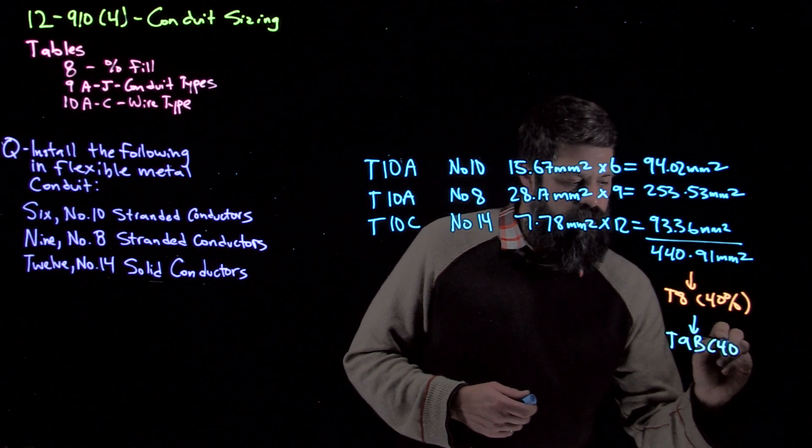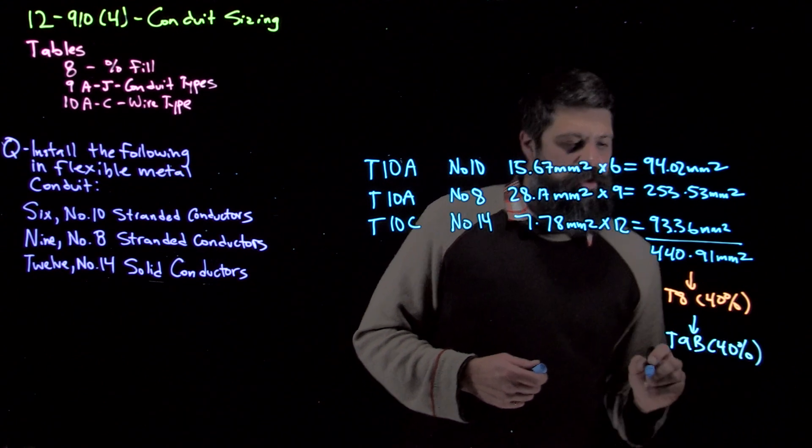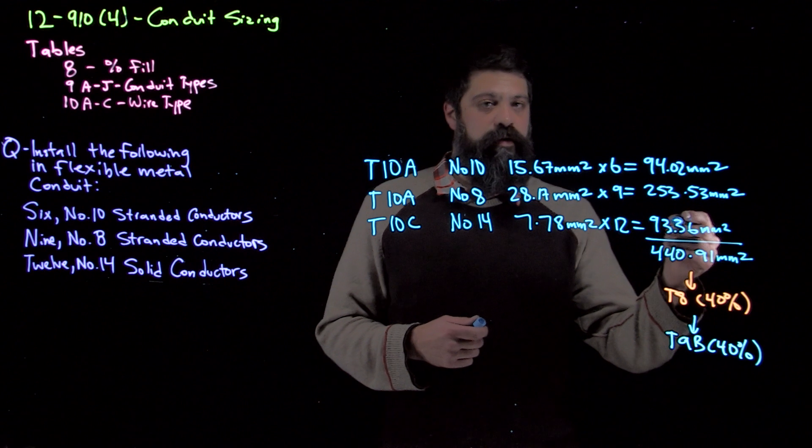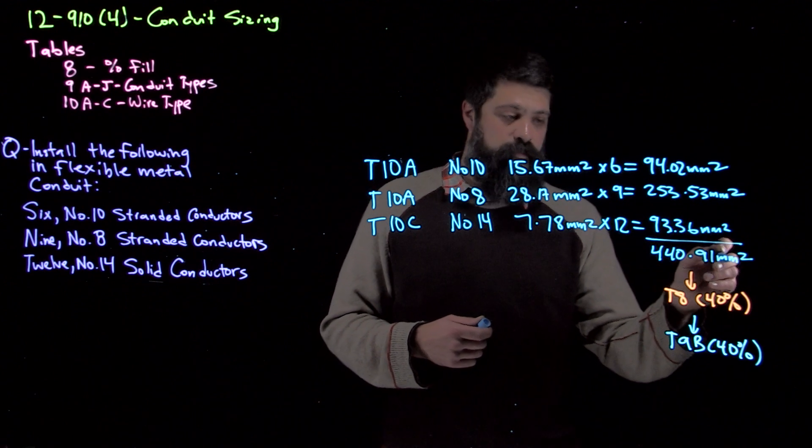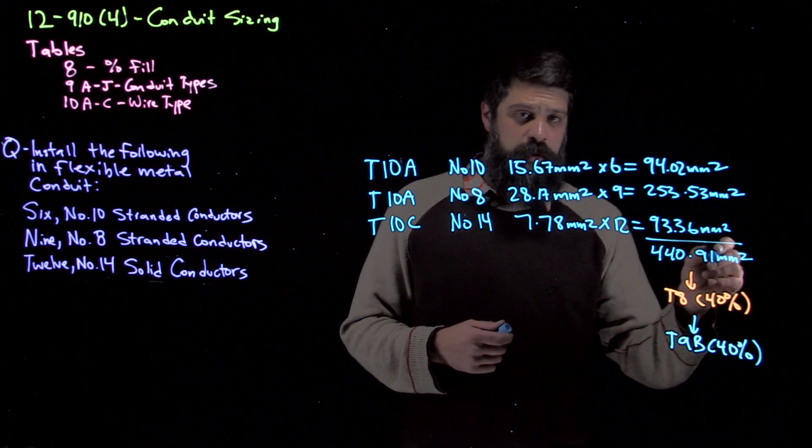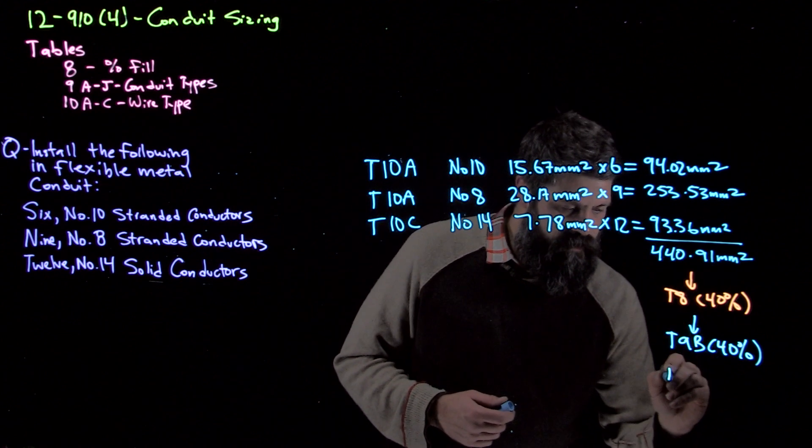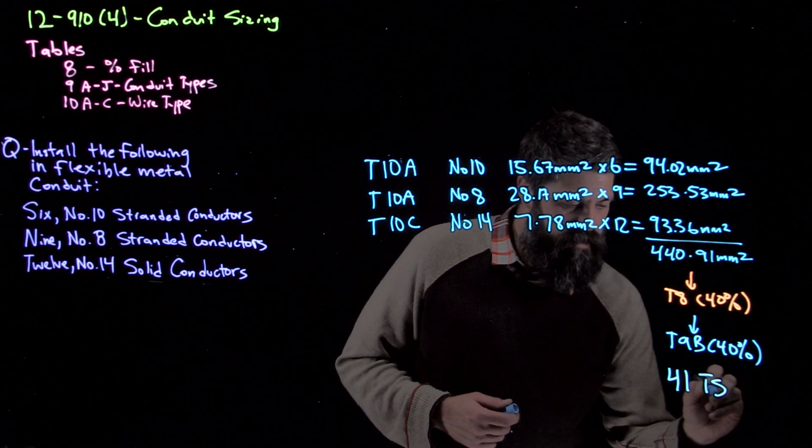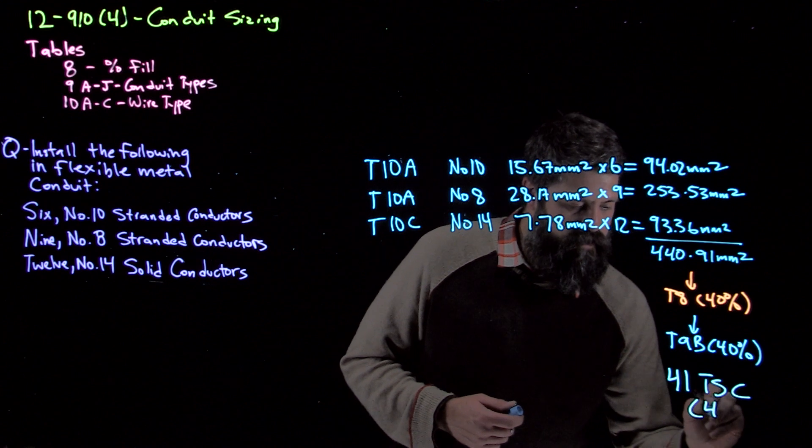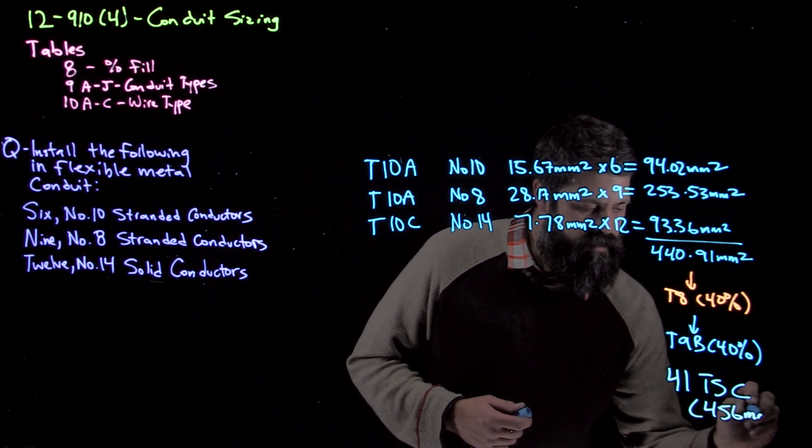And in the 40% column, we're looking for a number as big or bigger, the next size up from this 440.91 mm². That's going to take me to a 41 trade size conduit, which is good for 456 mm².